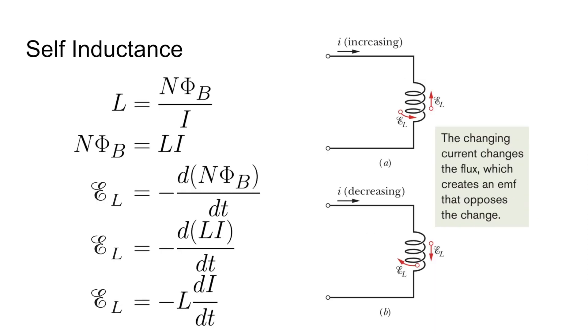So self-inductance also appears a lot. Remember, inductance is given by N times the magnetic flux over I. If we rearrange, we get N times the magnetic flux equals LI. And from Faraday's law, we get the induced EMF is equal to negative the change of N times the magnetic flux over time.